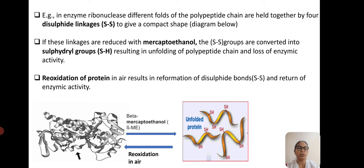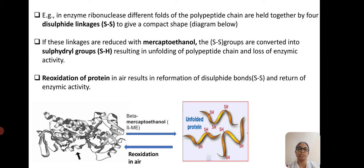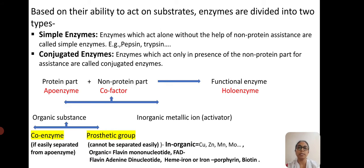We can see unfolding of the protein structure when only disulfide bonds remain. If we reverse this process, we can again get back the normal conformation of the protein with reoxidation in the presence of air. This is an example of how enzymatic proteins act only in their tertiary three-dimensional structures.